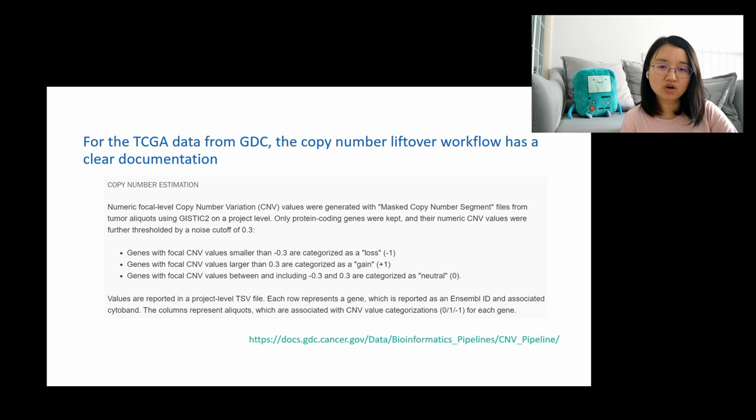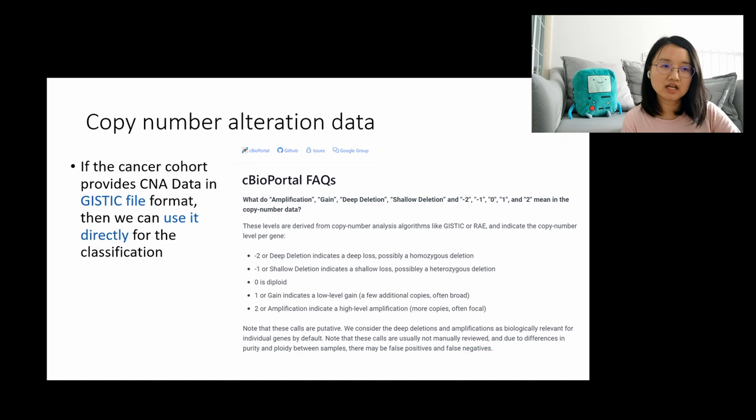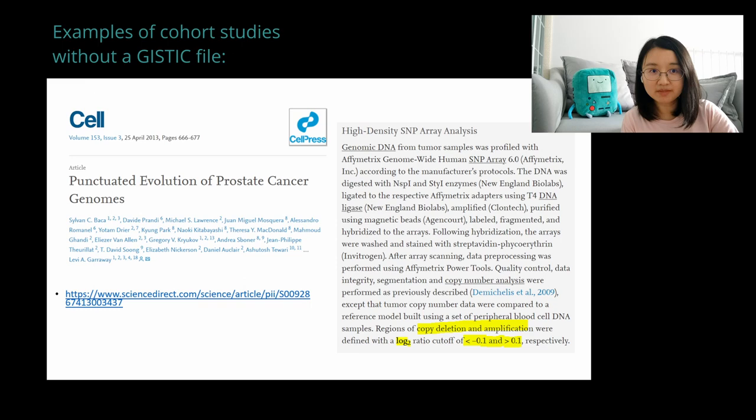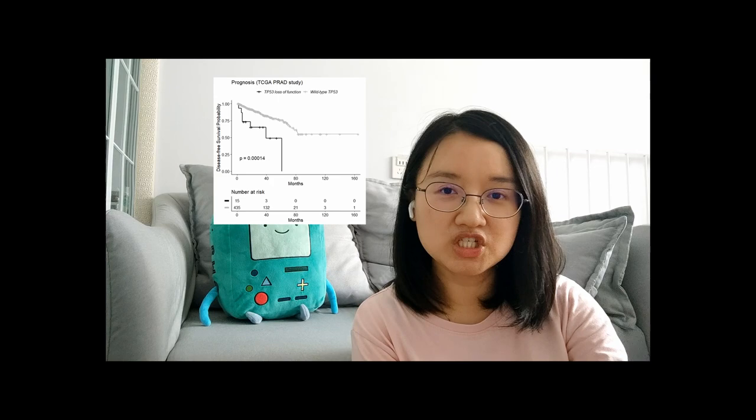Another concern is copy number alteration. In cBioPortal, there are two types of copy number files. One is in GISTIC format, which has been pre-processed with five number thresholds to categorize the copy number status, and we can use this for subgrouping. However, for some datasets that do not have the GISTIC file, we need to go back to the original paper to look for the predefined threshold to classify copy number amplification and deep deletion. After going through these three steps, you can proceed with visualization using any tool you like.